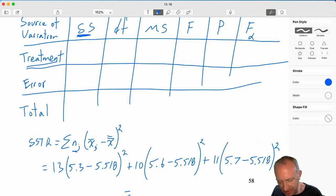We're going to do this in steps, just to make my life a little bit easier and to avoid any frustrating mistakes. 5.3 minus 5.518 squared times 13. So this first term is 0.618, plus 5.6 minus 5.518 squared times 10, 0.067.